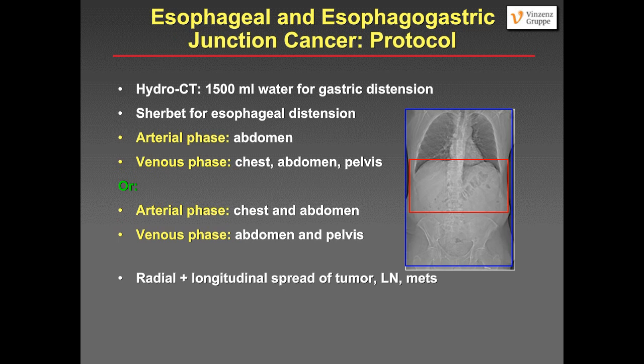For esophageal cancer, like with pancreatic cancer, we perform HydroCT with 1.5 liters of water and then give sherbet for esophageal distension. For the CT protocol, you can either scan the upper abdomen in the arterial phase and chest, abdomen, and pelvis in the venous phase; or scan the chest and abdomen in the arterial phase and add the abdomen and pelvis in the venous phase. It is important to assess the radial and longitudinal spread of tumor, lymph nodes, and metastases in the liver and lung. For lymph node imaging, we are not very sensitive or specific because size criteria are problematic.